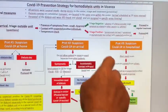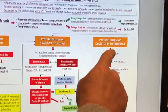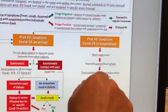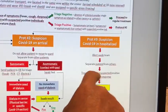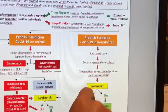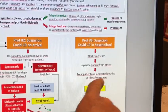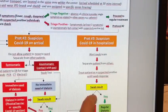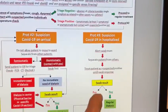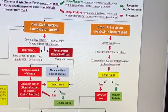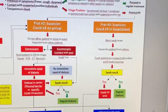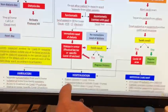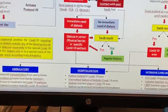Protocol number three covers suspicion of COVID-19 infection in a hospitalized patient. We need to alert the swab team, separate the patient from others, and treat them as a suspected positive until the swab result is available. Once the result is obtained, if positive, the patient will be definitively hospitalized and follow patient isolation in the COVID-19 area.